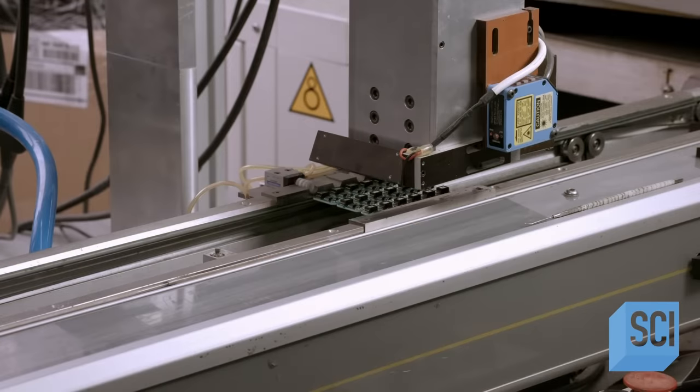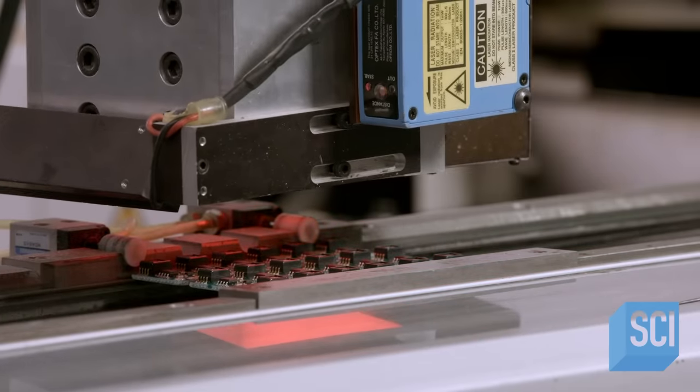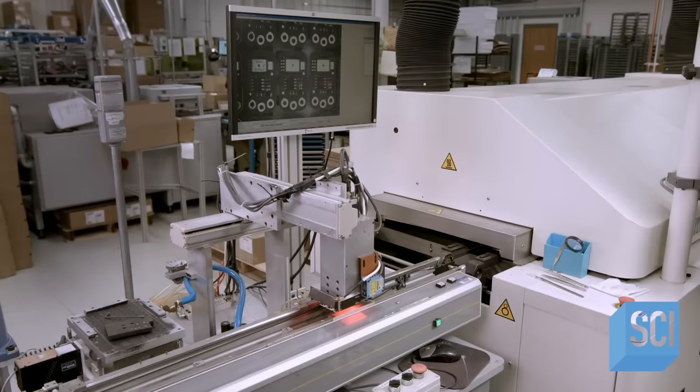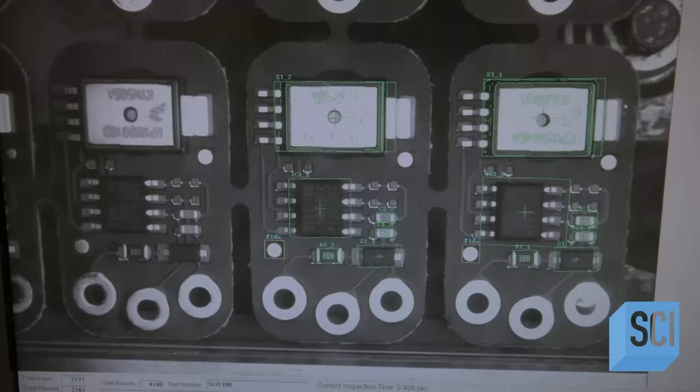Moving forward, the printed circuit boards arrive at a camera station. The camera clicks away and sends pictures of the boards to a computer. The computer analyzes the placement of each component.